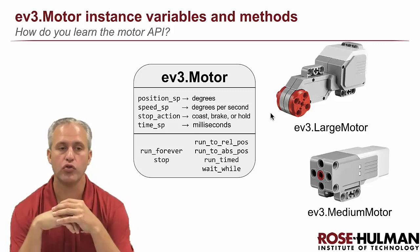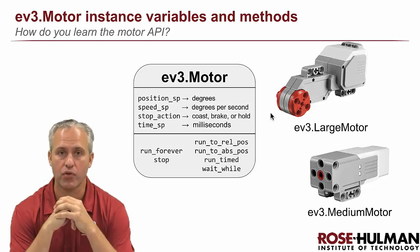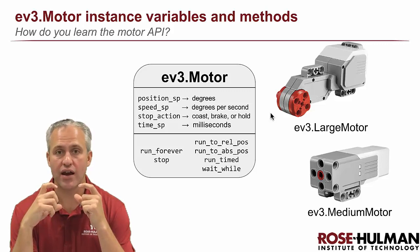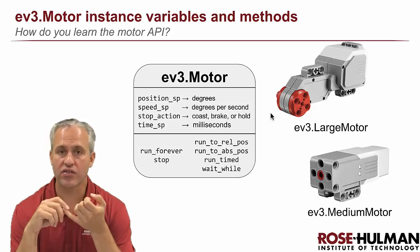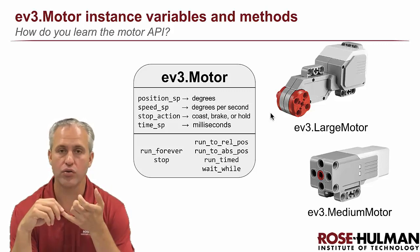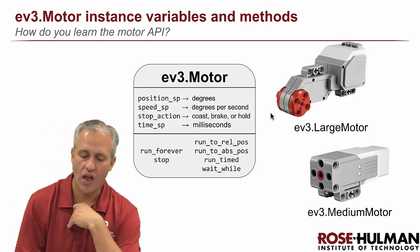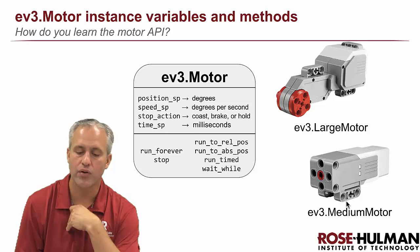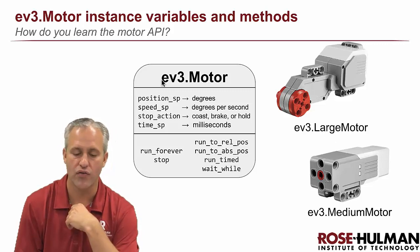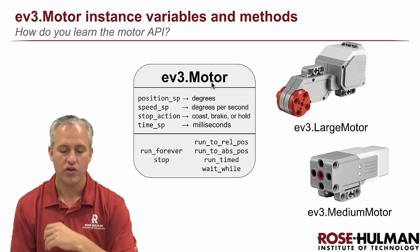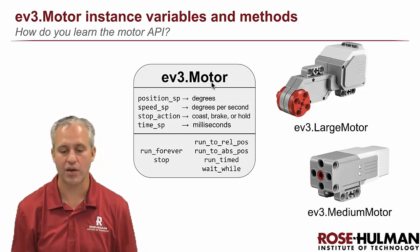The way these motors work is you create an object called either a large motor or a medium motor. When you create that object, it's got instance variables, so things that it knows, and then it's also got methods, so things you can make it do. Turns out that both the large motor and the medium motor are subclasses of the ev3.Motor, so they actually work the same. They've got the same API.